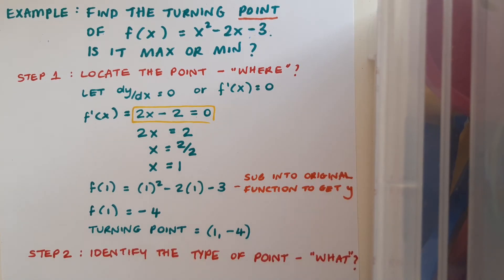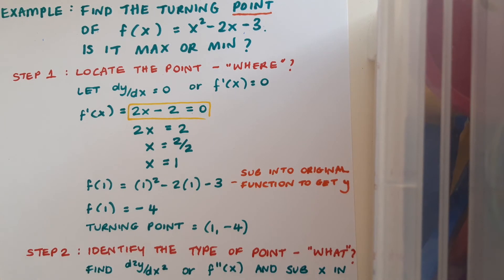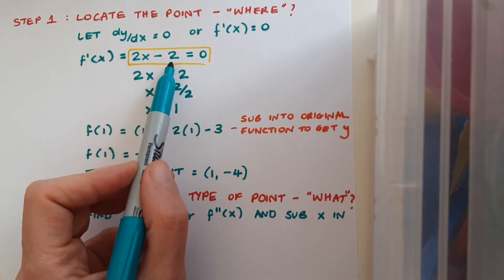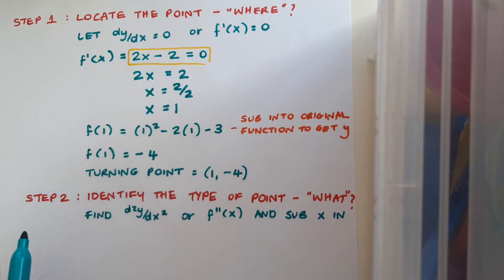I'm not quite finished yet though. I've found the turning point, but I don't know if it's max or min just yet. So step 2 is to identify the type of point, or find out what it is. To do this, we'll have to find the second derivative, d²y/dx² or f''(x), and sub the x that we got in step 1 into this. So to find this f''(x), my second derivative, I just take what I got in the first derivative and differentiate it. So in this case, f''(x) = 2.